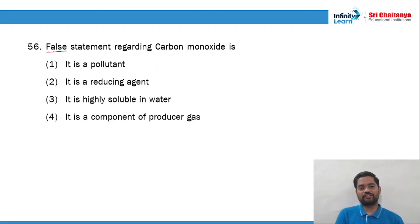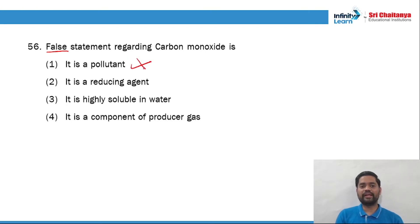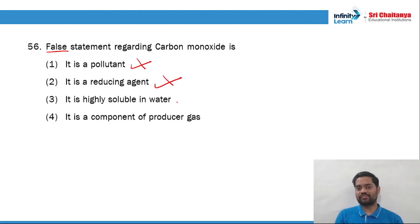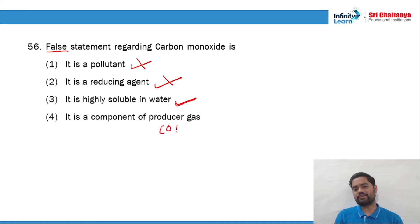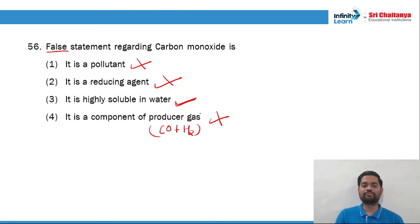Question 56: false statement about carbon monoxide. 'It is a pollutant' — true, hence not the right answer. 'It is a reducing agent' — true, hence not the right answer. 'It is highly soluble' — this is a wrong statement, and hence that is the right answer. 'It is a component of producer gas' — carbon monoxide plus hydrogen — this statement is also right. So question number 56, option 3 is the right answer.